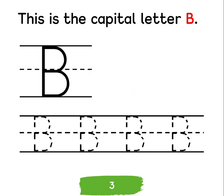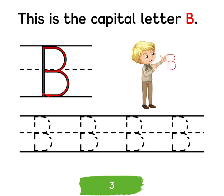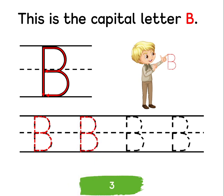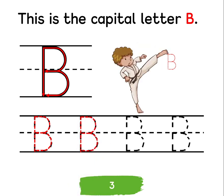This is the capital letter B. Down, around and around. Try and write with your finger. Now can you write with your foot? Well done.